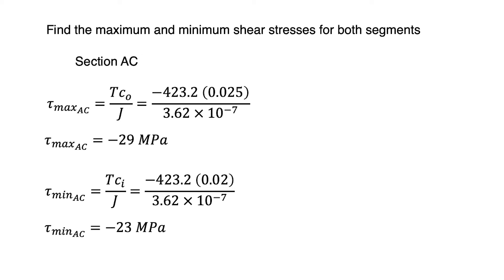The next question is find the maximum and minimum shear stresses for both segments. For section AC, τmax(AC) = TC_outer/J. Then we get τmax(AC) = -29 MPa. Then for τmin(AC), c is inner radius, and we get τmin(AC) = -23 MPa.